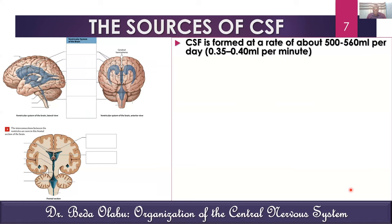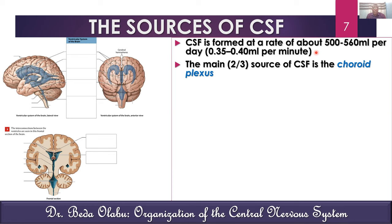A lot of CSF is produced per day — about half a liter (500 ml). Since the CSF spaces can only hold about 150–180 ml at any time, CSF must circulate multiple times per day. The rate of secretion is approximately 0.35 to 0.4 ml per minute. Most of this fluid — about two-thirds, close to 70% — comes from the choroid plexus.